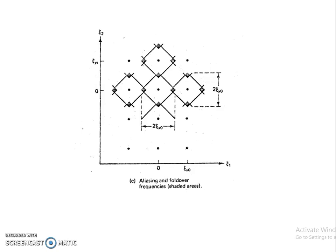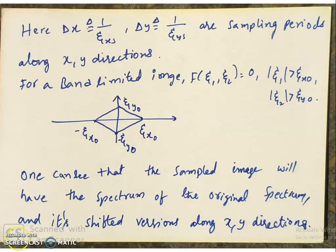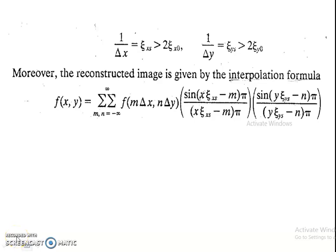We can limit the image to have frequency components less than zeta_xs/2 along the x-axis and zeta_ys/2 along the y-axis. The reconstructed image is given by f of x, y equals summation over m, n from minus infinite to infinite of f of m·delta_x, n·delta_y multiplied with sinc of (x·zeta_xs − m)·π / ((x·zeta_xs − m)·π) multiplied with sinc of (y·zeta_ys − n)·π / ((y·zeta_ys − n)·π). This is a straightforward extension from the one-dimensional case due to the separability property of the Fourier transform.